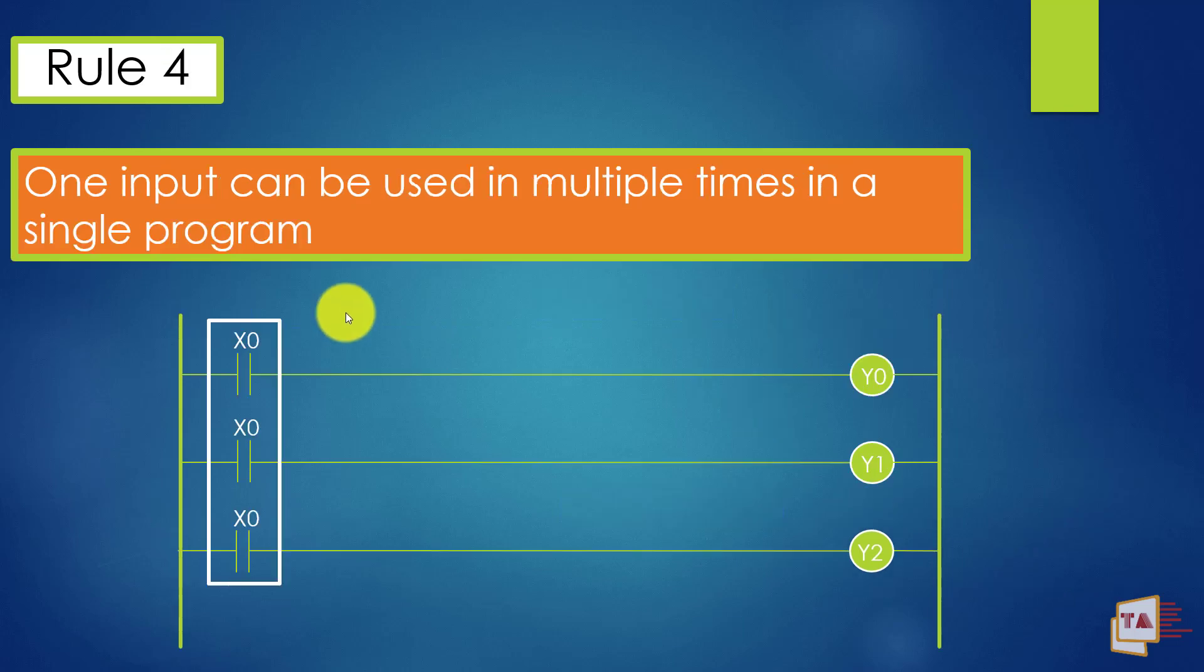Now rule number four: one input can be used multiple times in a single program. In single program, one input, you can use one input multiple times. A lot of times, wherever you want, you can use it. X0 here, here, here, here. You can put anywhere you want.